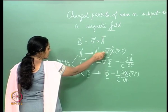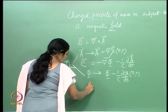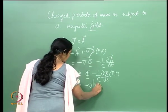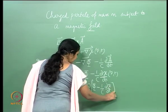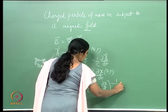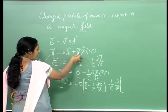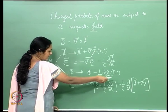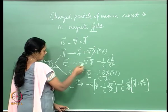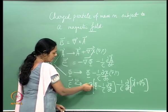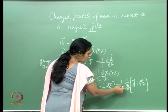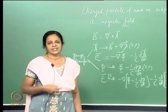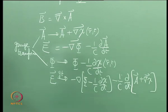The gauge transformation is not a space-time transformation. The transformation is made on the vector and the scalar potential, not on space-time. So it is an example of an internal symmetry transformation — something that does not change space-time itself, but only changes other quantities, in this case A and phi. It is very clear that if A changed in this manner and phi changed in that manner, E is left unchanged. Under the gauge transformation, E goes to minus gradient of phi minus 1 by C delta chi by delta T, minus 1 by C delta by delta T of A plus grad chi. The terms cancel out and the electric field is left unchanged, even as the magnetic field is left unchanged under the gauge transformation.